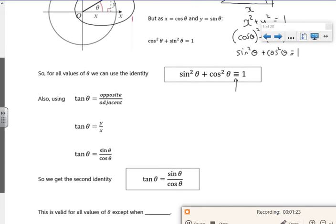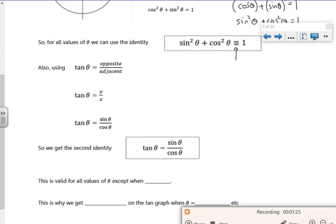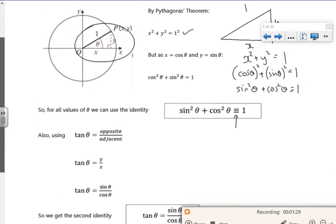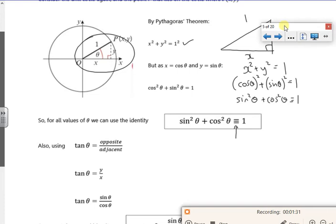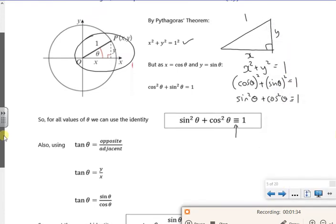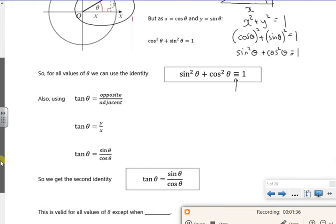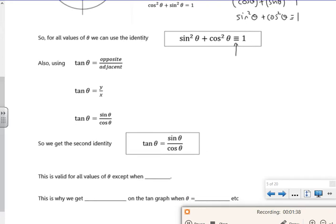So we've got something else. We know that tan is opposite over adjacent, which is y over x from that. Let's move that down from the triangle. But y is sin, x is cos, so I get tan as being sin over cos.